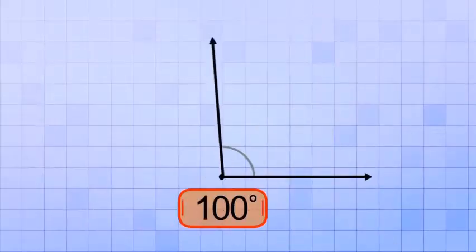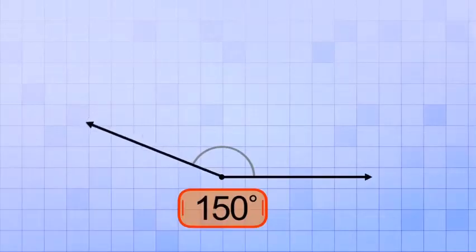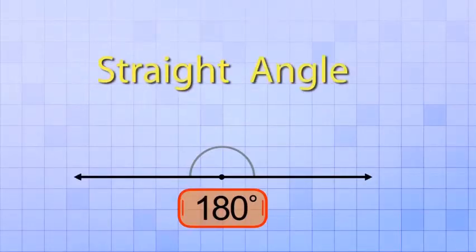Ready? Here we go! 100 degrees, 110, 120, 130, 140, 150, 160, 170, and 180. Aha! Does this look familiar? Yup, it's a straight angle like we learned about in the last video. The rays point in exactly opposite directions and the angle they form is 180 degrees. And that's also a really important angle measurement to memorize.